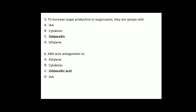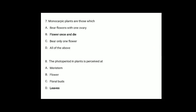Question 5: To increase the sugar production in sugarcanes, they are always sprayed with gibberellin, because sugarcane stores carbohydrates in its stem and spraying with gibberellin increases the length of stem and yield by as much as 20 tons per acre. ABA acts antagonistically — opposite — to gibberellic acid. Question 6: Monocarpic plants are those which produce flowers once in their lifetime and die — example: bamboo. Question 7: The photoperiod of plants is mainly perceived at — option D: leaves.